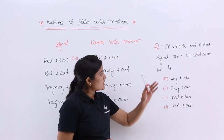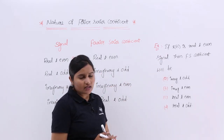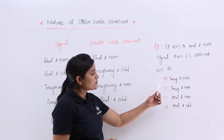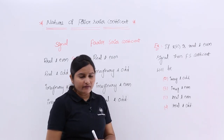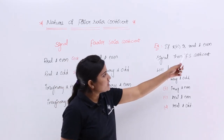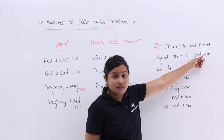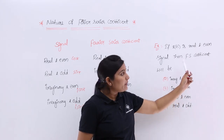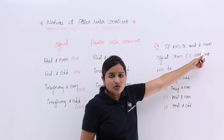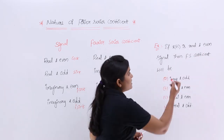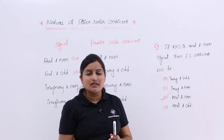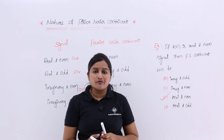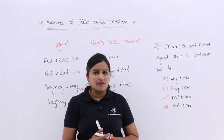Now coming to an example: if x(n) is a real and even signal, the Fourier series coefficient will be — option A: imaginary and odd, option B: imaginary and even, option C: real and even, option D: real and odd. If the signal is even, no change will be there. Here you are having 'even', so no change — you get real and even as the Fourier series coefficient nature. This is how we apply this theory to problems related to Fourier series and Fourier transforms.